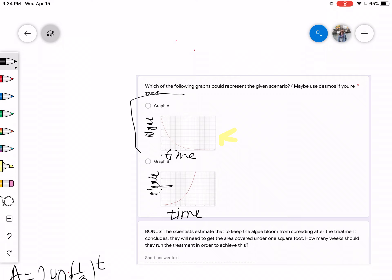Awesome, I agree. Graph A shows that our algae is decreasing. The bonus we're going to skip, because we're going to learn about that a little bit later. That was just a fun extension problem. Please let me know if you have questions. Otherwise, have a great day.